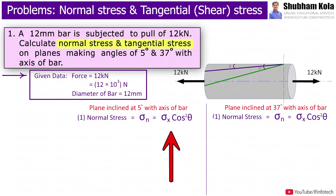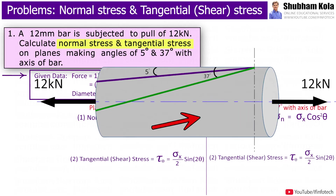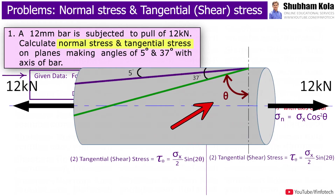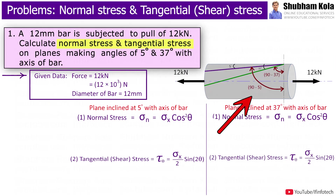The formula for normal stress is σx·cos²θ, and tangential stress is (σx/2)·sin2θ, where θ is the angle of the inclined plane with the vertical axis. But in the problem, the angle is given with the horizontal axis, therefore here θ is 90°−5° and 90°−37°.